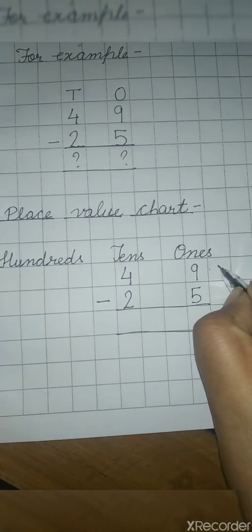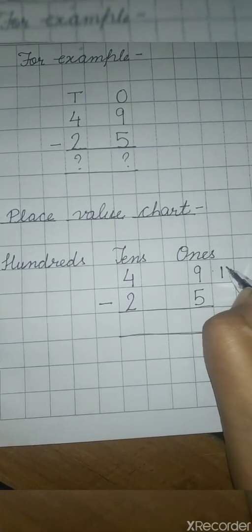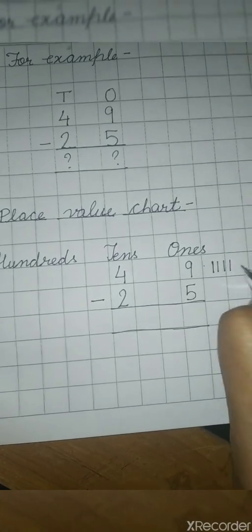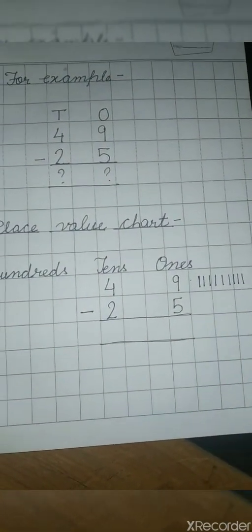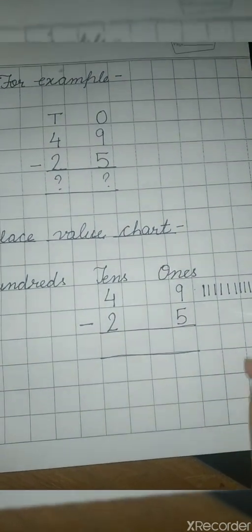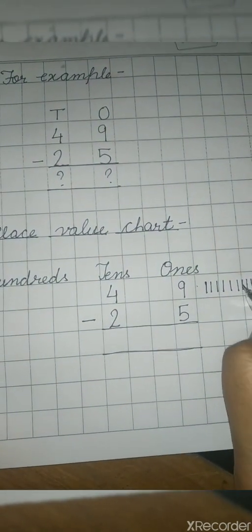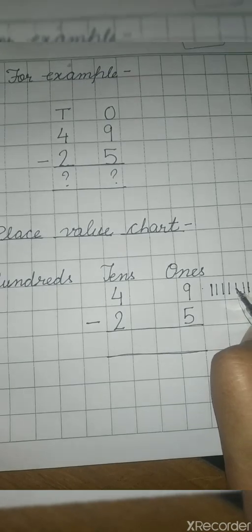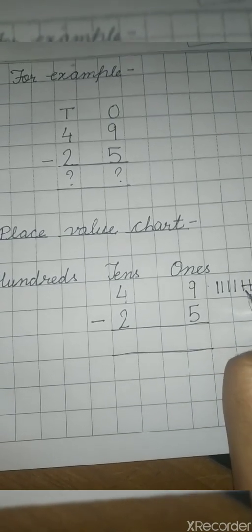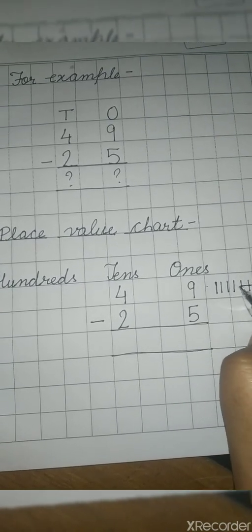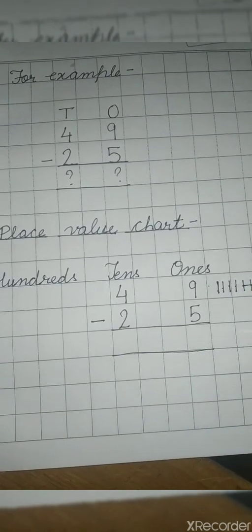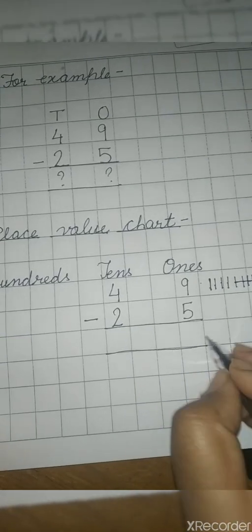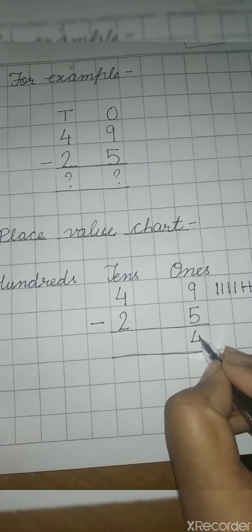First you will draw 9 lines — 1, 2, 3, 4, 5, 6, 7, 8, 9. Then you will cut 5 lines — 1, 2, 3, 4, 5. After that you will count the rest of the lines — 1, 2, 3, 4. So 9 minus 5 will be 4.